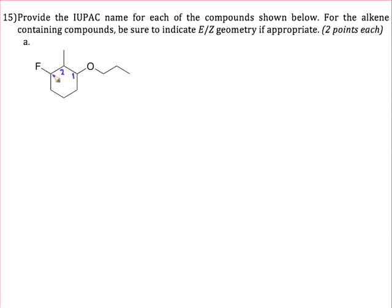And then we number to give the lowest possible numbering of the rest of the substituents. Our parent has 6 carbons in that cycle, so it's going to be cyclohexane.